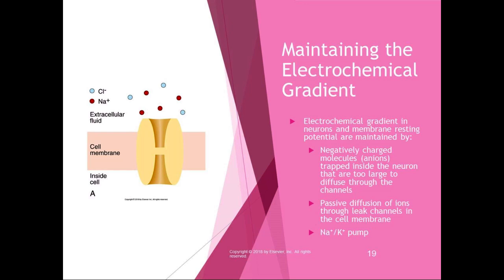We get some passive diffusion of ions through leak channels. There is also a sodium-potassium pump, which pumps sodium out of the cell and potassium into the cell using ATP for energy. Each sodium-potassium pump actively carries two potassium ions into the cell and three sodium ions out with each cycle. The three main ions that help maintain the electrochemical gradient are sodium, potassium, and chloride.